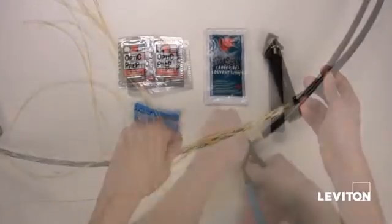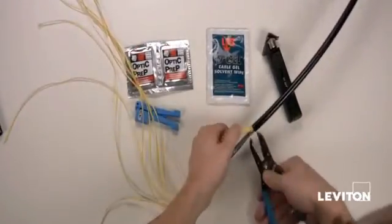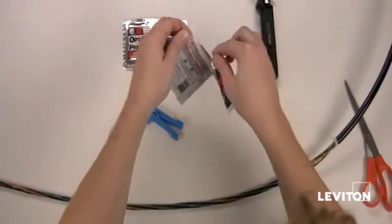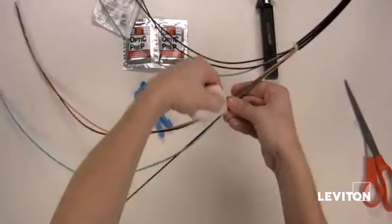Cut back the Kevlar strands to the mark made previously. Use the D-Gel, then alcohol wipes to clean the water block off of the loose tube buffer.